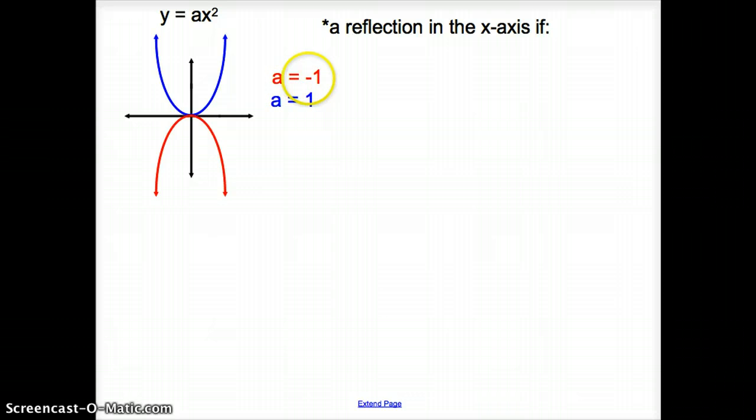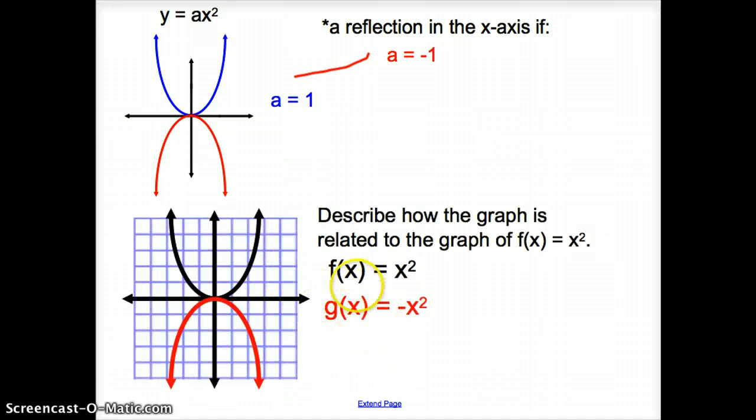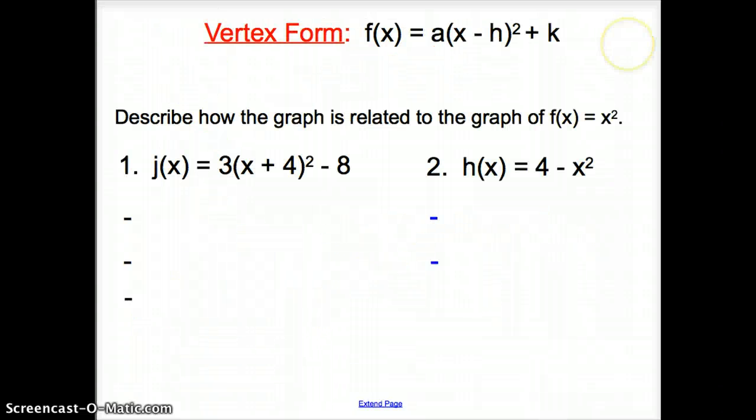Now what happens if our a is negative? And now it doesn't have to be just negative 1. It could be any negative number. Well, we would have a reflection. We would have a reflection over the x-axis if a was negative. So here, notice how we have this g(x) function as being negative. If it is flipped across, it is reflected across this x-axis.